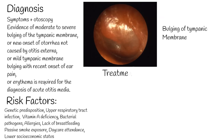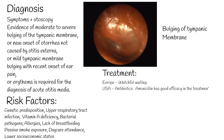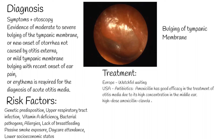Treatment of otitis media with antibiotics is controversial. In Europe, watchful waiting is initially more common, and antibiotics are warranted if unresolved. In the USA, treatment is antibiotics. When a bacterial etiology is suspected, the antibiotic of choice is high-dose amoxicillin for 10 days in both children and adult patients who are not allergic to penicillin. Amoxicillin has good efficacy in the treatment of otitis media due to its high concentration in the middle ear.